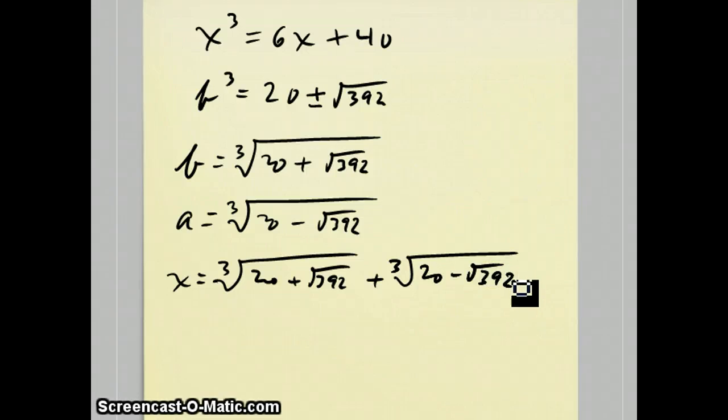But before I said the answer was 4, well it turns out that this thing does equal 4 if you run it through the calculator. And actually the cube root of 20 plus the square root of 392 is 2 plus the square root of 2 and this other one is 2 minus the square root of 2.